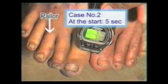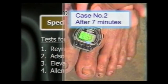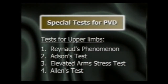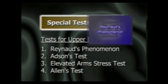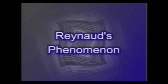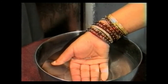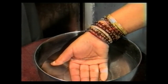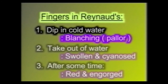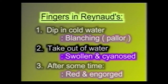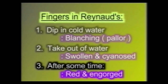Now we will come to some special tests for examination of chronic ischemia in the upper limbs. The Raynaud's Phenomenon test: if you are suspecting Raynaud's phenomenon, dip the fingers of both hands in ice-cold water and watch for blanching or pallor of the fingers. If the fingers become blanched, take the hands out of the cold water. The fingers will become swollen and cyanosed, and gradually, as the spasm of the arteries wears off, they become red and engorged due to flow of blood in the dilated capillaries.